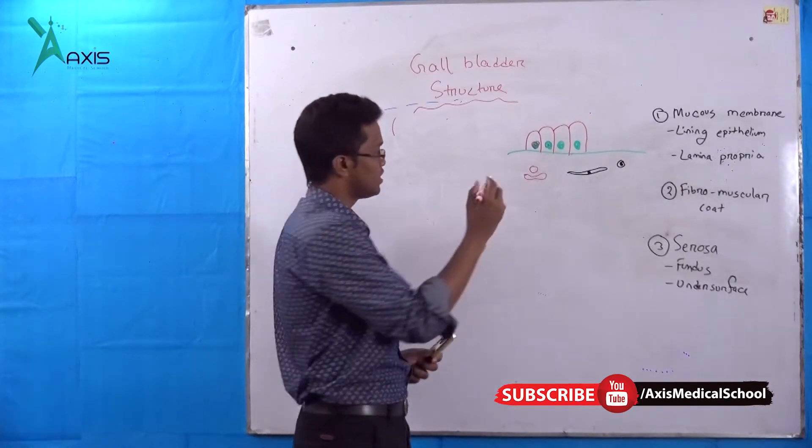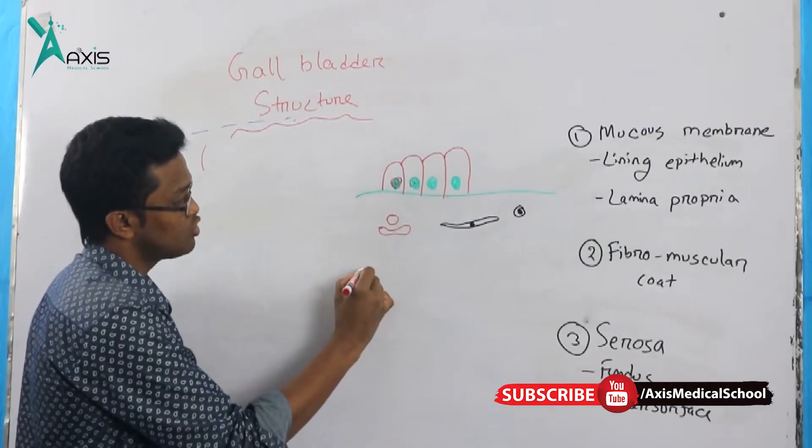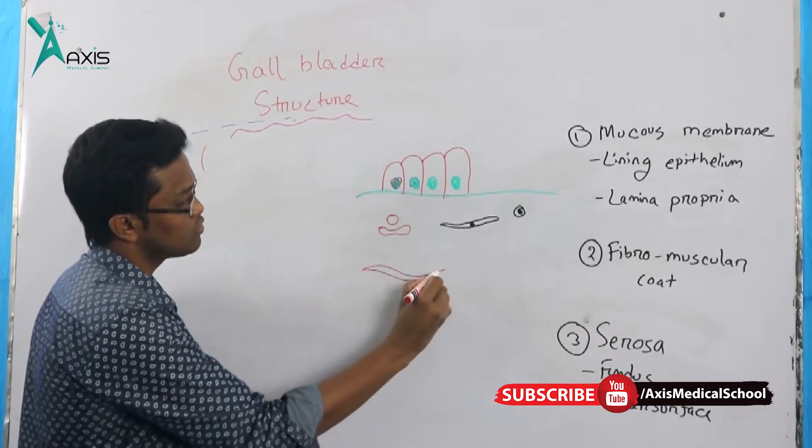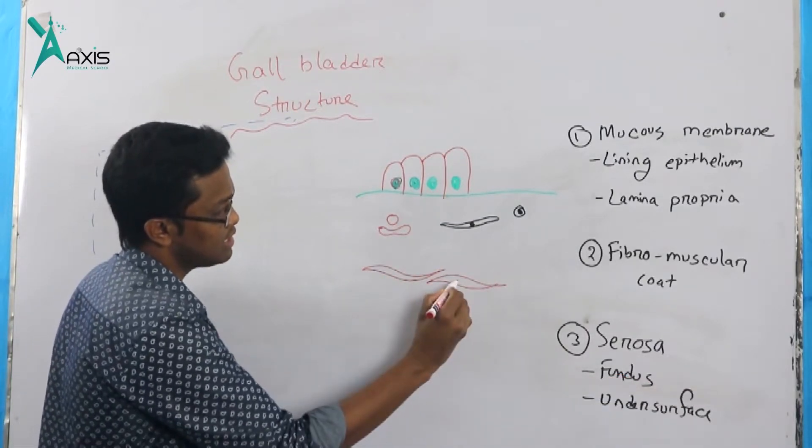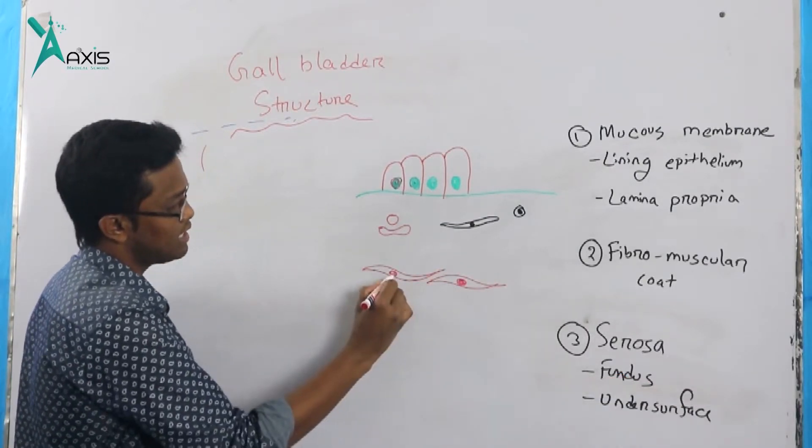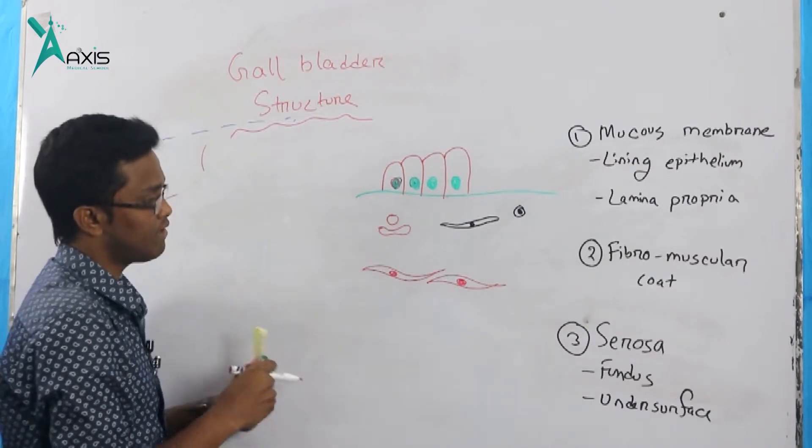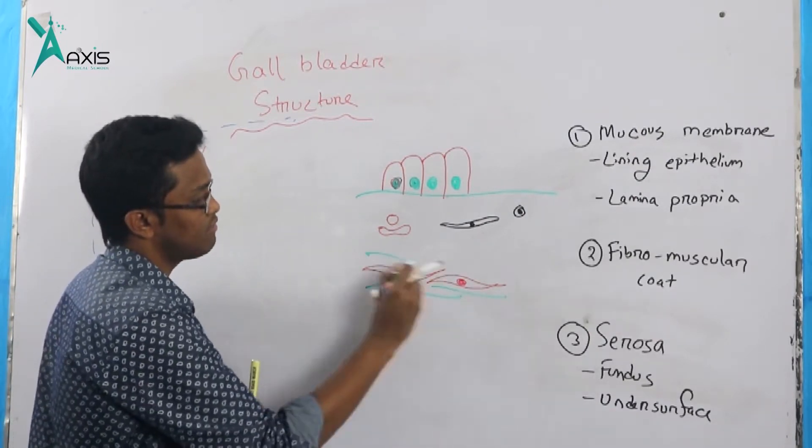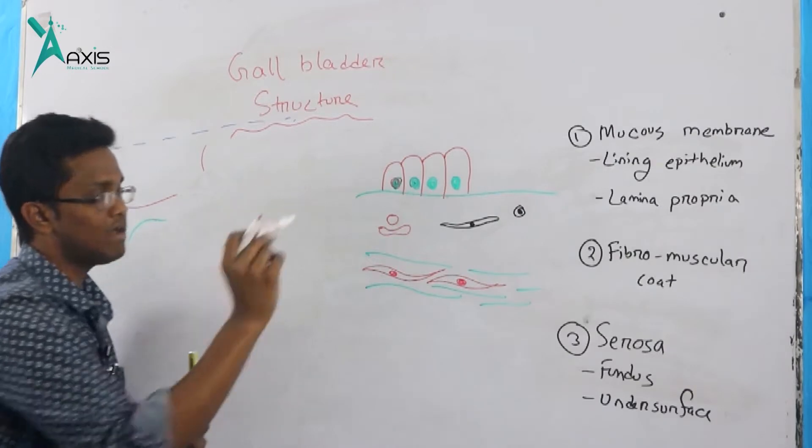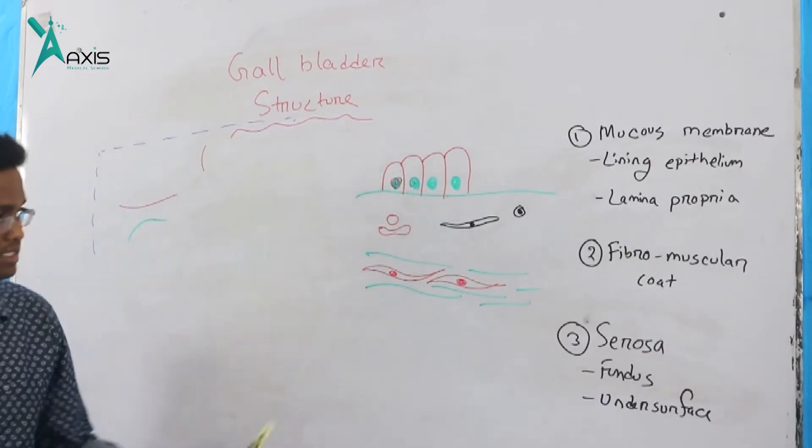Next is the fibromuscular layer. Here there are smooth muscle cells, spindle-shaped smooth muscle cells with rounded nucleus, and many fibrous tissue, collagen fibers. This layer is called the fibromuscular layer.